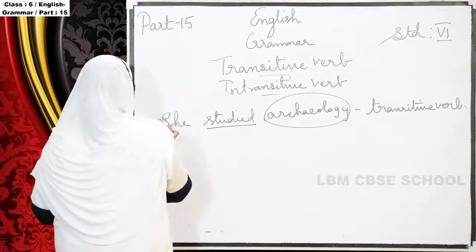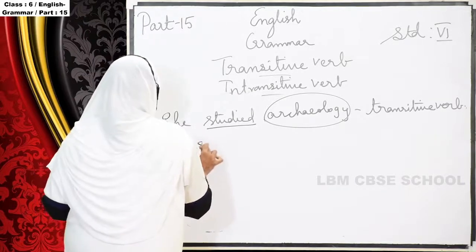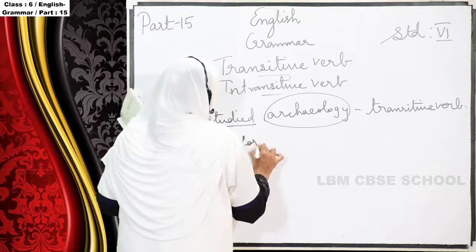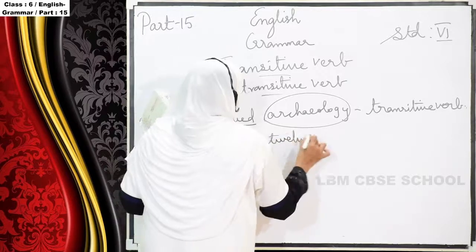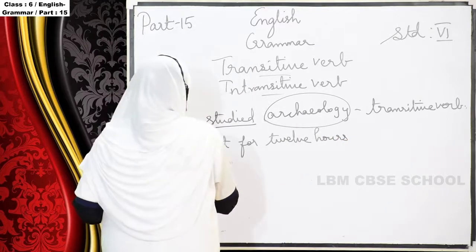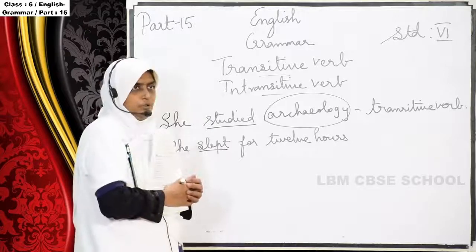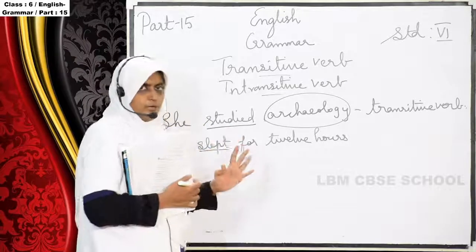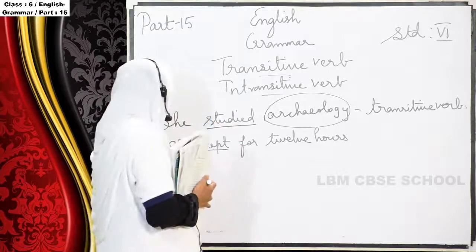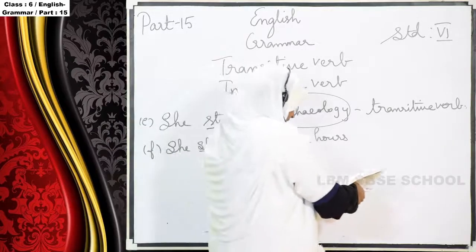F. 'She slept for 12 hours.' Here 'slept' is the verb, but it doesn't take an object. It just tells the statement — 'she slept for 12 hours' — that's all. So this one is an intransitive verb.